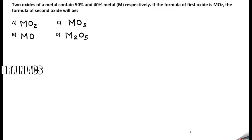So let us start. I hope you could see the question — just read it: 'Two oxides of a metal contain 50% and 40% of the metal respectively. If the formula of the first oxide is MO₂, then the formula of the second oxide is?' So here we are talking about two oxides.